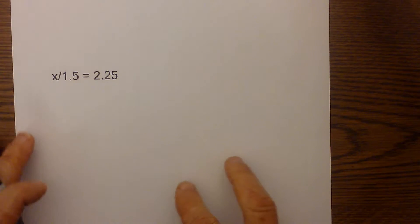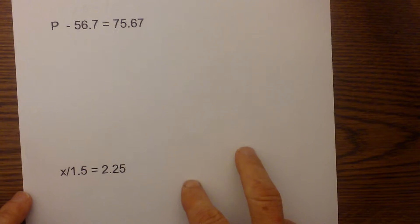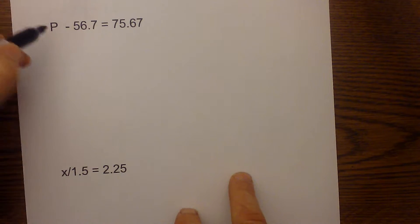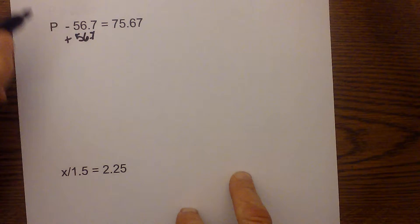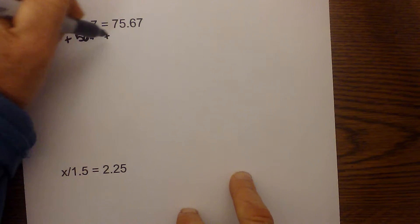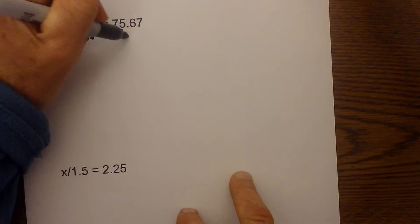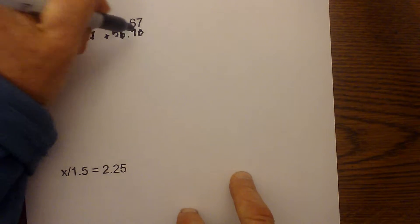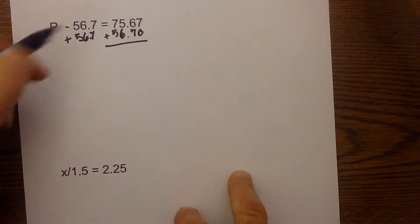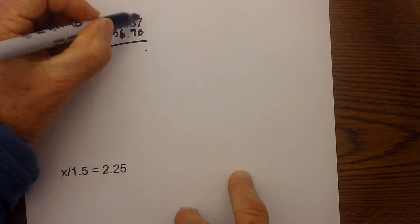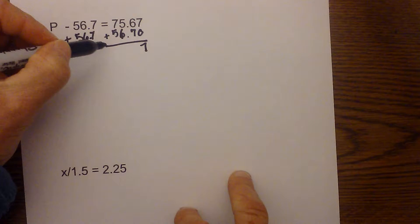Okay so again remember the two rules that we have is you are going to undo and you are going to keep it the same. So again I have subtraction so undo the subtraction. I do the opposite. I add 56.7 and so I am going to add 56.7 on this side. And notice I need to add a zero because I am keeping the decimals all lined up properly. And so now I just add so that becomes a 7.